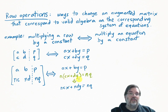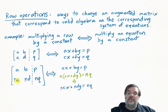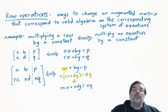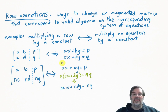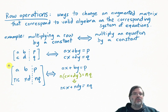Anything you do to a row corresponds to something you would do on the original system of equations. The first row corresponds to the first equation and doesn't change. Imagine you had taken the second equation and multiplied both sides by the number n: n times (cx + dy) on the left, and n times the constant q on the right. After distributing, you get nc·x plus nd·y equals n·q. So the coefficient of x is nc, the coefficient of y is nd, and the new constant is nq. We know we can multiply both sides of an equation by the same number — that's a valid algebraic operation that won't change the solution.